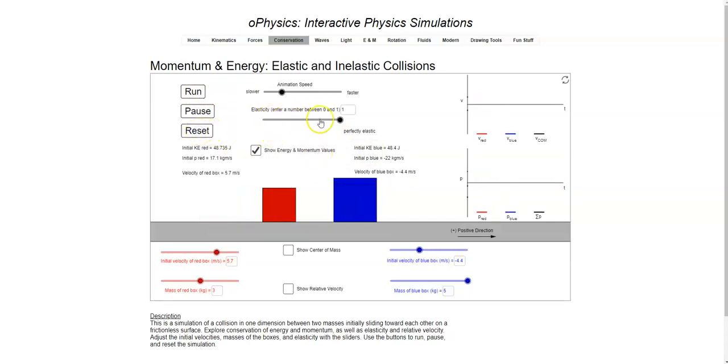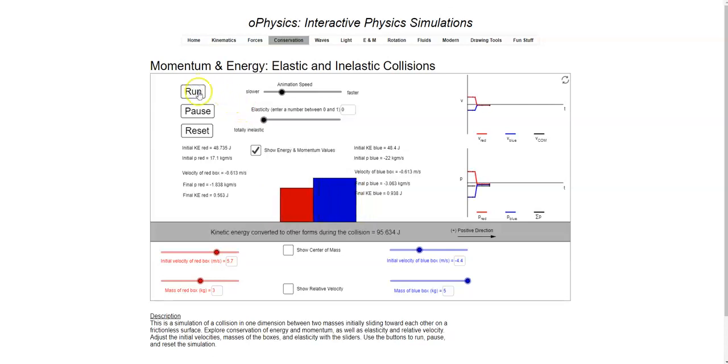Now I can change the elasticity. I can bring that all the way down to zero, and that becomes an inelastic collision where they completely stick together. So watch what happens if I run the same thing. They don't bounce off of each other. They stick together. The blue guy is slightly more massive so you can see that this system is moving slightly towards the left.